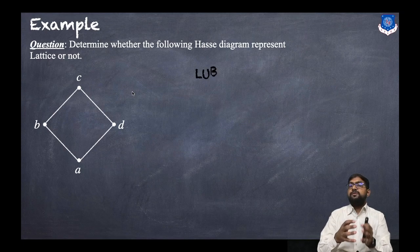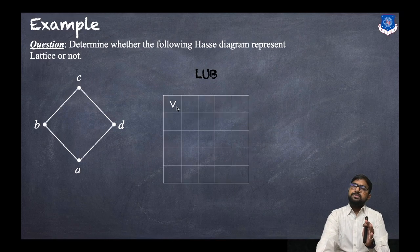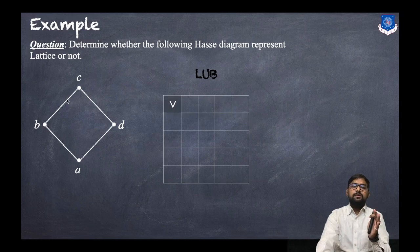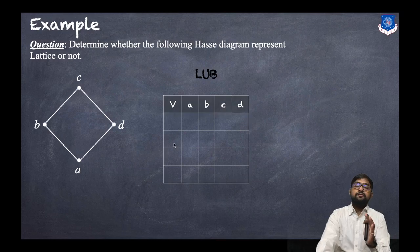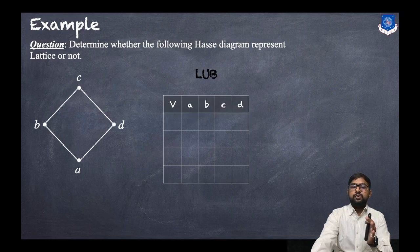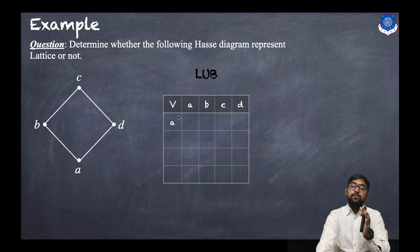First let us draw the LUB table. There are four points, named a, b, c, and d. We write a, b, c, d in the rows and a, b, c, d in the columns, and find the LUB for each pair.